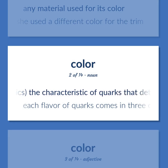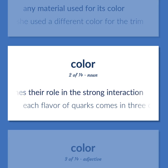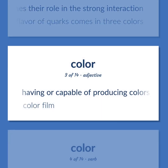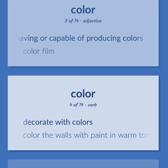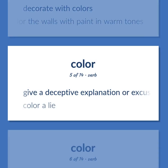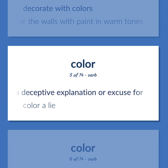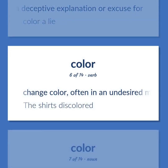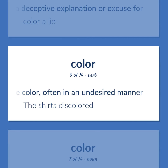Physics: the characteristic of quarks that determines their role in the strong interaction — each flavor of quarks comes in three colors. Having or capable of producing colors — color film. Decorate with colors — color the walls with paint and warm tones. Give a deceptive explanation or excuse for — color a lie. Change color, often in an undesired manner — the shirts discolored.